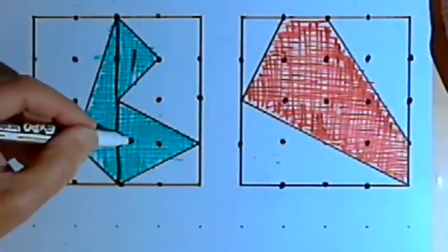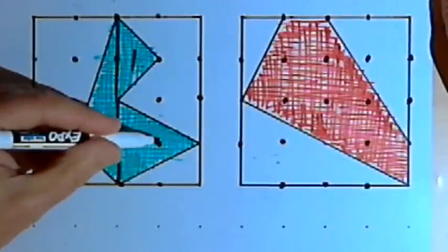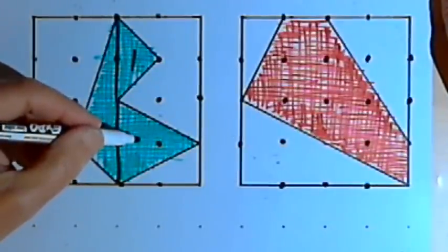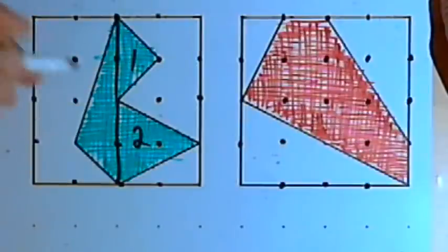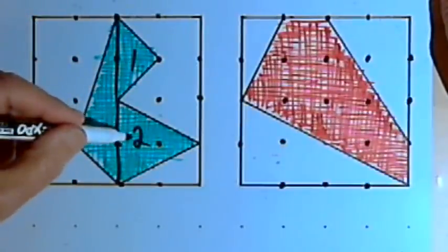The base times the height is 2 times 2, or 4, and one-half the base times the height would be one-half of 4, or 2. So this triangle has an area of 2 square inches.